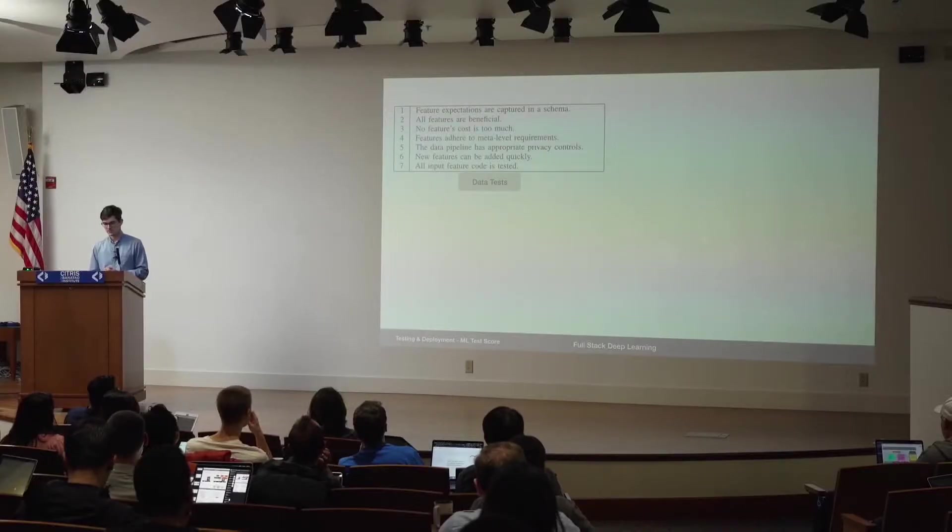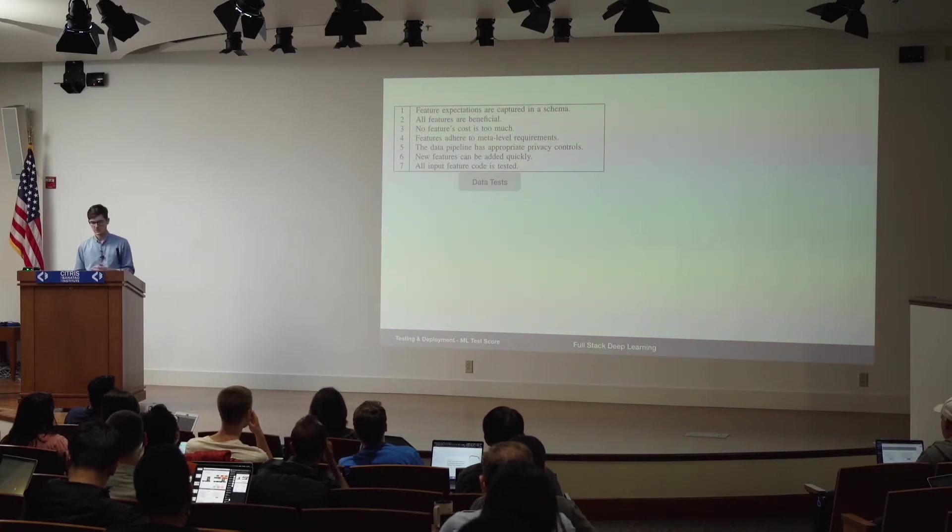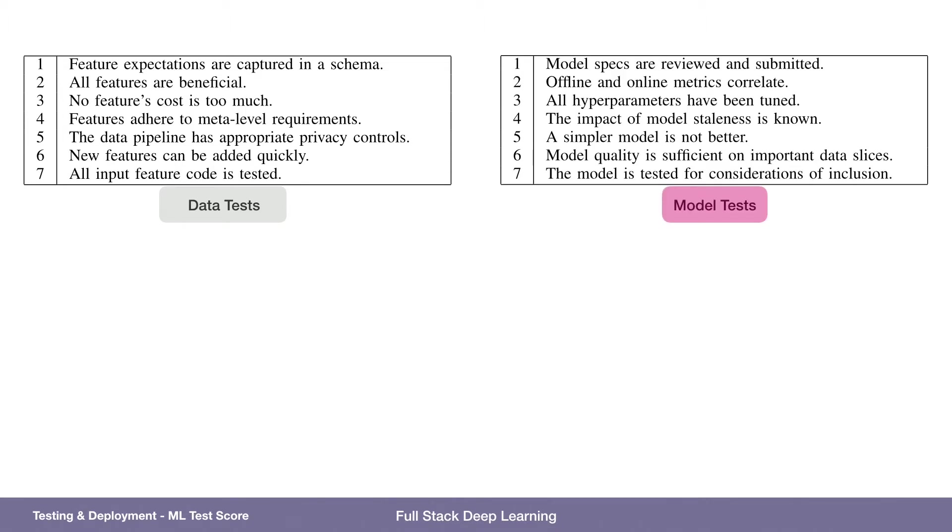Let me read through the machine learning rubric — the test score. For data, you want to capture feature expectations in a schema, all features are beneficial, no feature costs too much, features adhere to meta-level requirements (such as a business reason to have a specific feature), the data pipeline has appropriate privacy controls so you're not leaking sensitive data, new features can be added quickly, and all input feature code is tested.